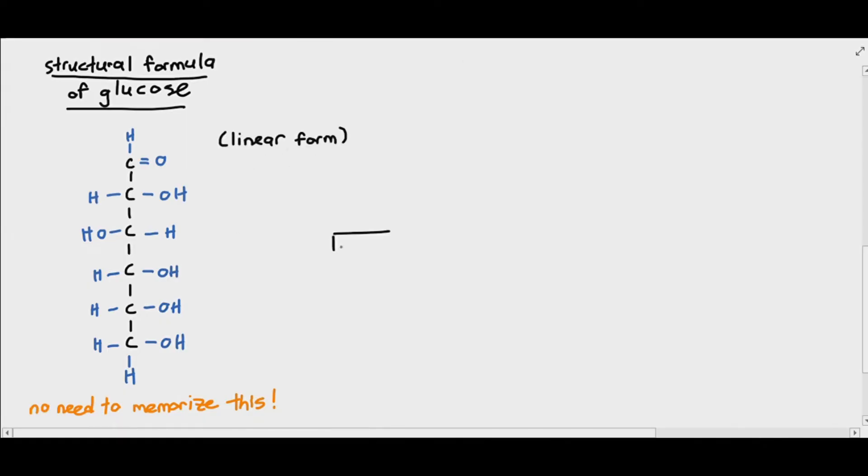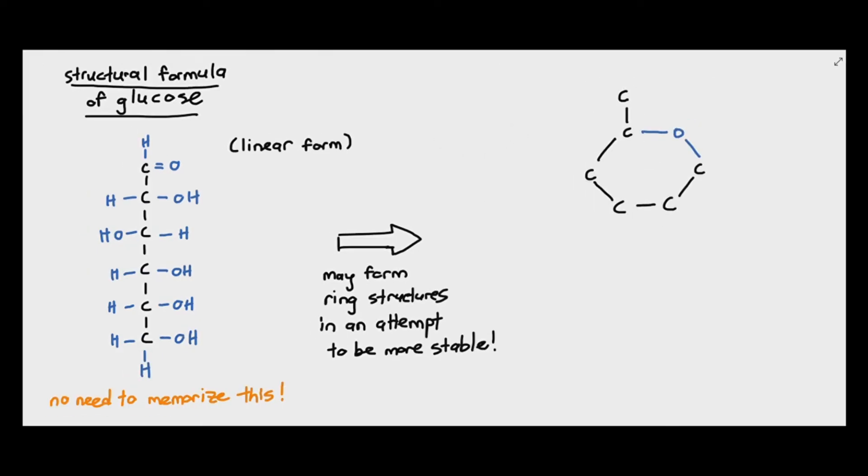Now, glucose can exist in a linear form, as I'm drawing it right here. So, good news is you do not have to memorize this formula. But most of the time, glucose in nature does not prefer to exist as a linear form, because it's less stable. And molecules, because of entropy, they are trying to be more stable. So, how does the glucose molecule try to be more stable? They decide to form a ring structure. The ring structure is an attempt of the linear molecule to be more stable.